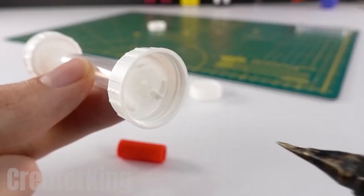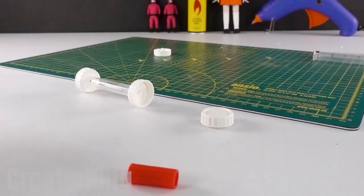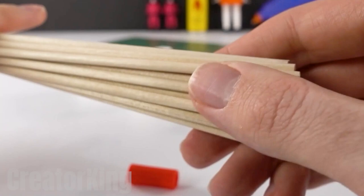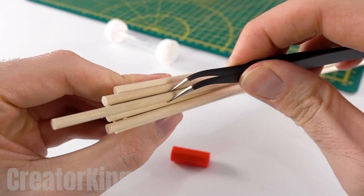With a soldering iron, melt a hole in the center of each cap where we'll insert a thin wooden stick like the ones you see on the screen. I used to use these sticks to make scale models and now I use them to create inventions. I am proud of myself. I have grown a lot.